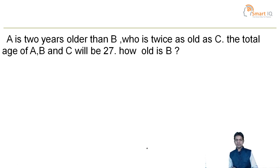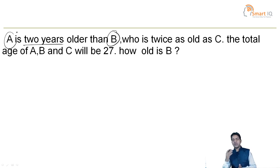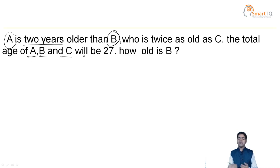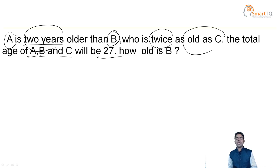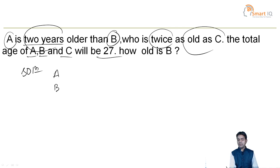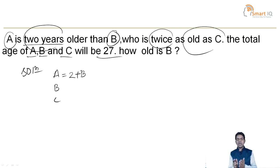Look at another question. A is 2 years older than B, who is twice as old as C. The total age of A, B, and C will be 27. How old is B? Here there are 3 persons: A, B, and C. What is the given data for A? A is 2 years older than B, that is A equals B plus 2.